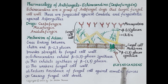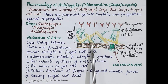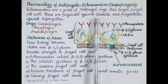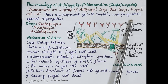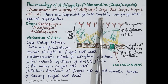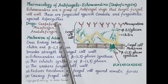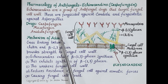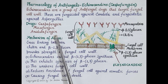Echinocandins are fungicidal against candidal fungal infections and fungistatic against aspergillus fungal infections — so they kill candida while they inhibit the growth of aspergillus. Three drugs are included in this class: caspofungin, micafungin, and anidulafungin.